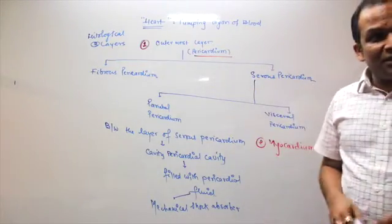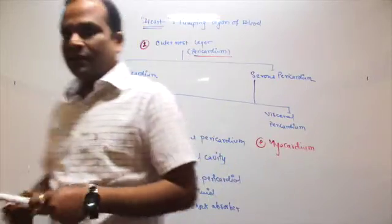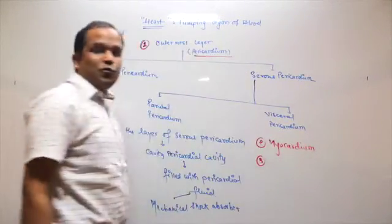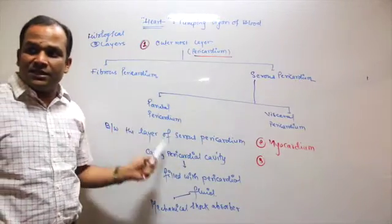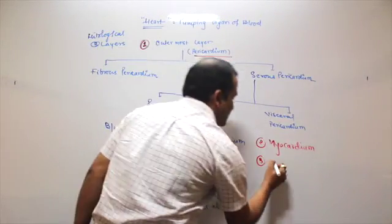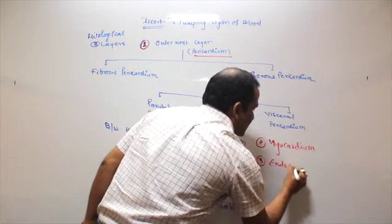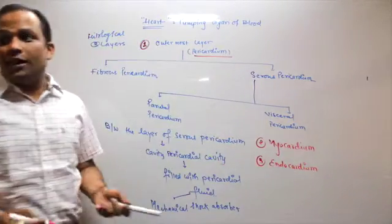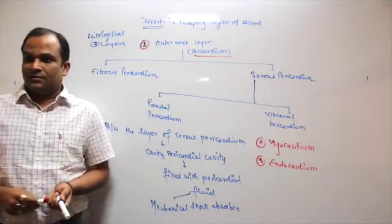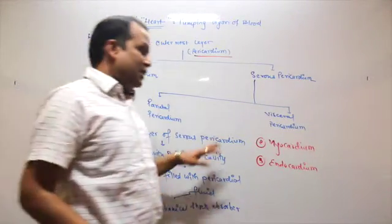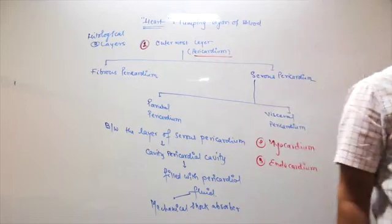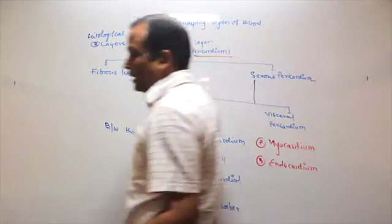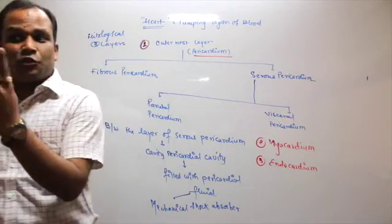The third one, the innermost layer of the heart, is the endocardium. So the circulatory system histologically is made up of three layers.